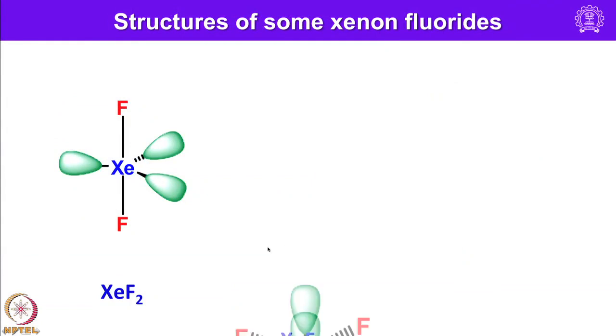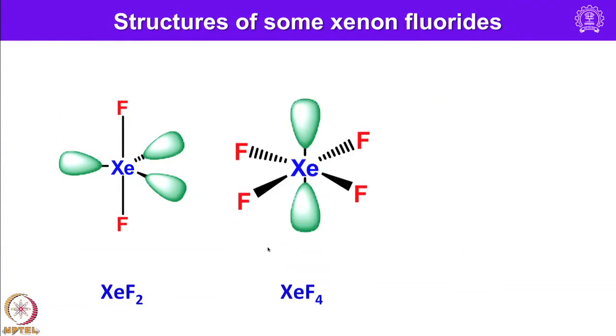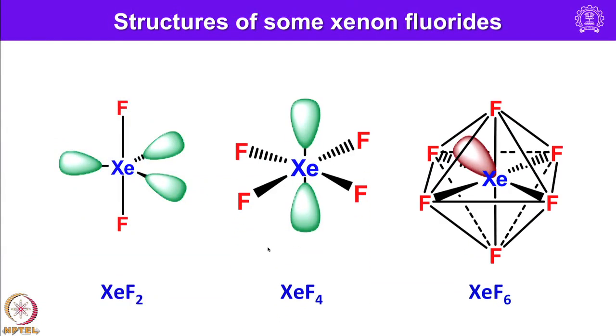The structures of XeF2, XeF4 and XeF6 are shown here — the lone pair is represented by the lobe shown. All of the xenon fluorides are powerful fluorinating agents, able to oxidize a wide range of compounds. In many cases XeF2 is a very selective oxidant, able to oxidize the central heteroatom of a main group compound such as arsenic or phosphorus, but not the organic substituents bonded to it.